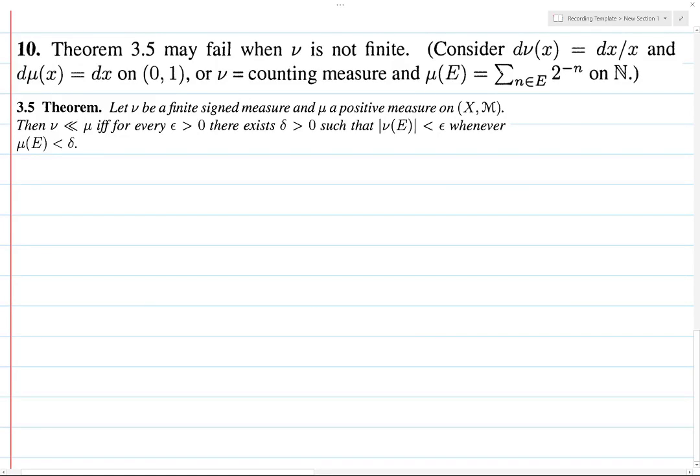On to exercise 3.10. This one's a little interesting. We're asked to give examples of when a theorem might fail if some of the premises do not hold.